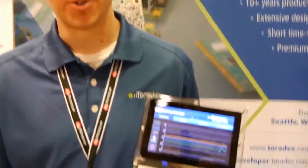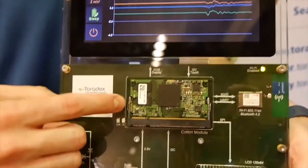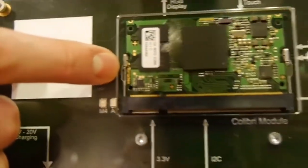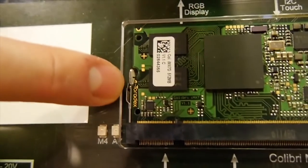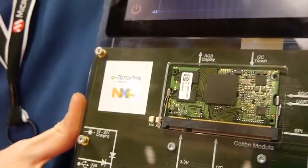I'll show you our IOT demo utilizing the Toradex Calibri IMX7 system on module with the NXP i.MX7 system on chip. It's a heterogeneous multi-core architecture. It has ARM Cortex A7s and ARM Cortex M4 cores on the same chip.